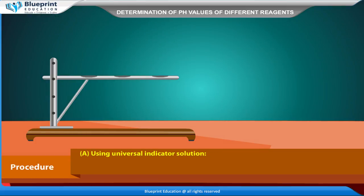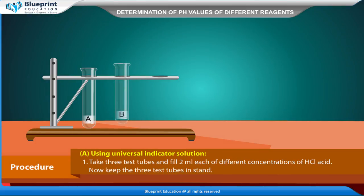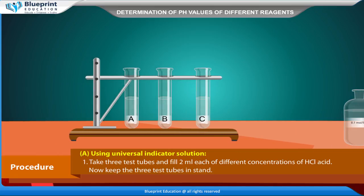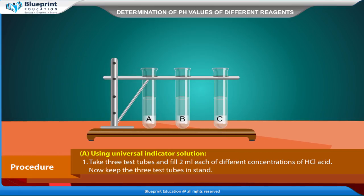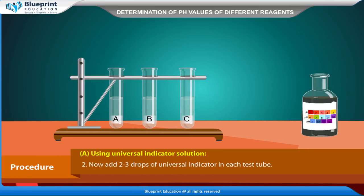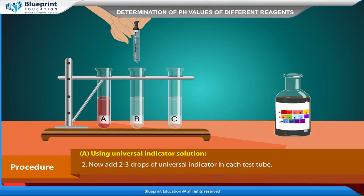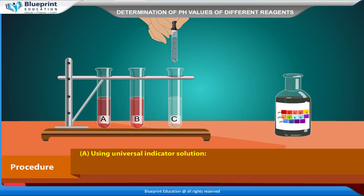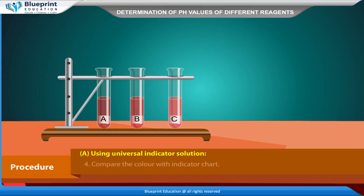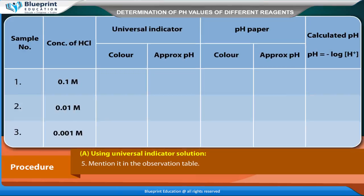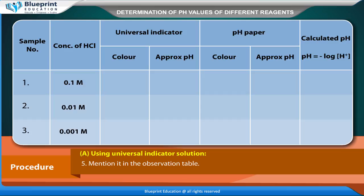Procedure using universal indicator solution: Take 3 test tubes and fill 2 ml each of different concentrations of HCl acid. Keep the 3 test tubes in a stand. Add 2 to 3 drops of universal indicator in each test tube. Note the change in color and compare it with the indicator chart. Record observations in the observation table.